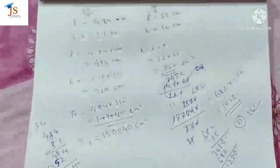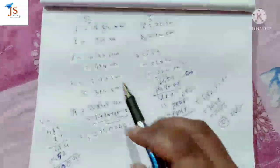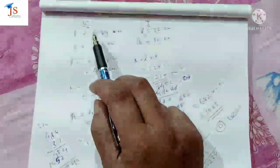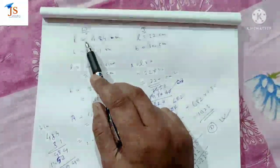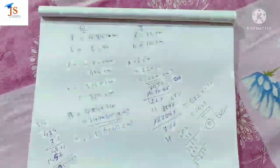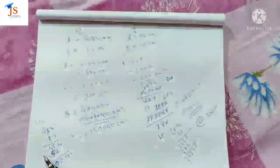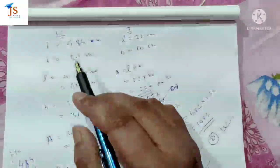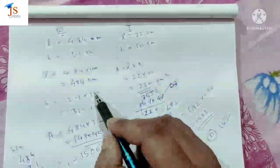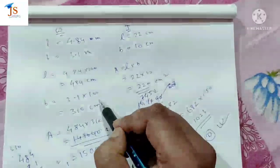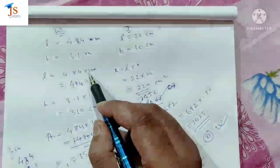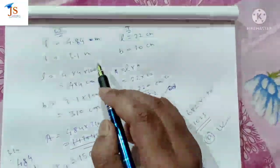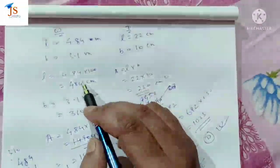Option D is the right answer. Now let me remind you — once I will rewind. We need to remember to convert units from centimeters to meters: from 1 cm to 1 meter below.